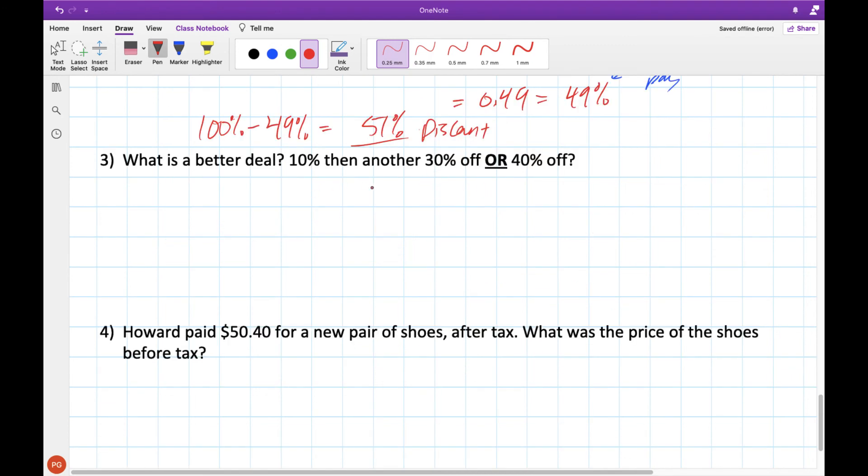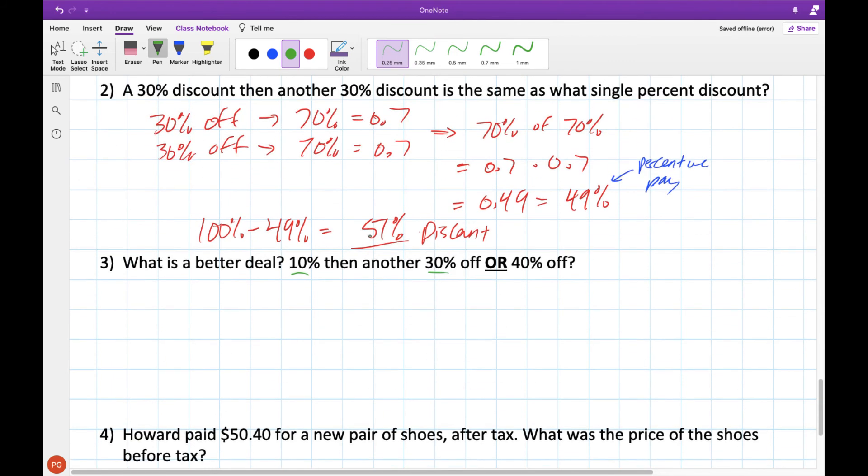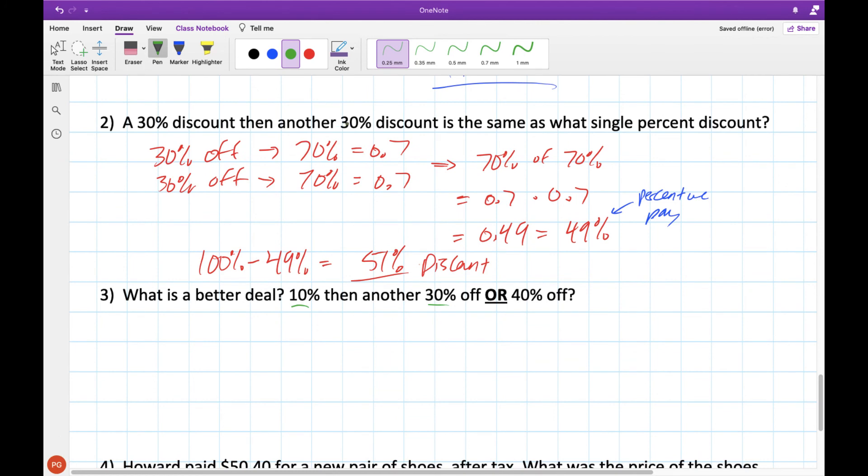Now we've got to think about which of these is a better deal. 10% then another 30% or just 40% off. Now if we think about 10% and 30%, these add up to 40. But as we've seen in some of these examples, 30 and 30, they add up to 60. But that's not the same as what we get when we do 30% then another 30%. So we've got to do this calculation and figure out what single percentage discount this actually works out to.